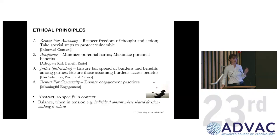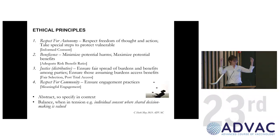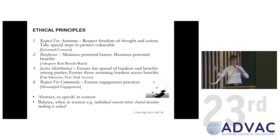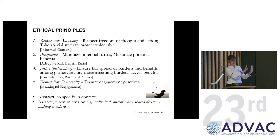The first is respect for autonomy — vaccine researchers must respect the freedom of thought and action of vaccine participants. Where participants have vulnerabilities, they may need to implement special steps. The second is beneficence: vaccine researchers need to anticipate potential harms and take steps to mitigate them, and also consider potential benefits and take steps to maximize those. The sweet spot is where risks have been sufficiently minimized and are offset by a sound compensatory reason — either a direct benefit to participants, or generally to society and knowledge gains.